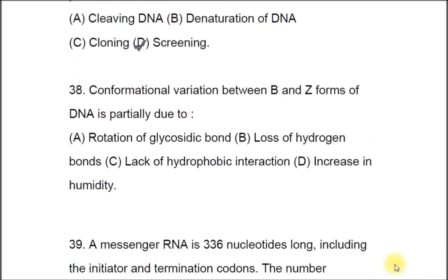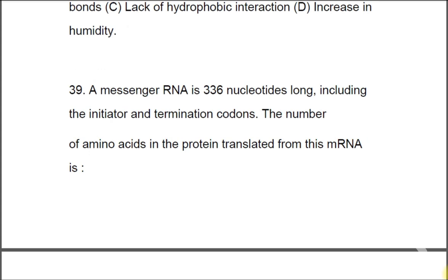Question 38: Conformational variation between B and Z forms of DNA is partially due to A) rotation of glycosidic bond, B) loss of hydrogen bonds, C) lack of hydrophobic interaction, D) increase in humidity. The correct option is B, loss of hydrogen bonds.